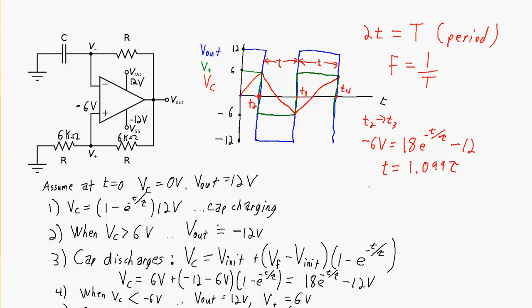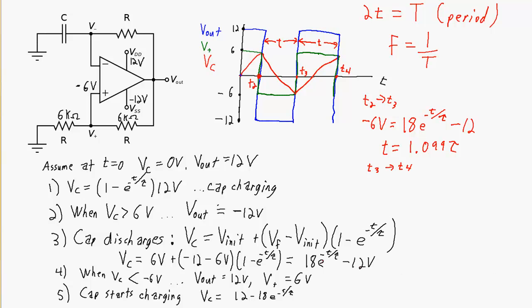Similarly, for the charging phase, we set the capacitor voltage equal to 6 volts in the charging equation: 6 equals 12 minus 18e to the negative t over tau. Solving again gives t equals 1.099 tau. Therefore, the period is equal to 2 times 1.099 tau, which is approximately 2.2 tau. The frequency is equal to 1 over 2.2 tau. This is specific to the case where the two voltage divider resistors are equal.